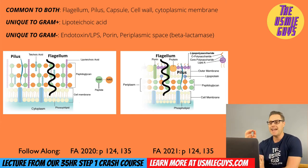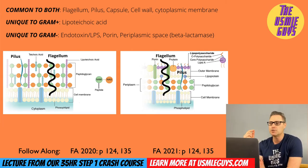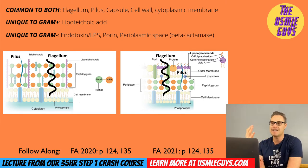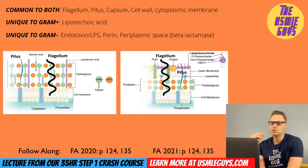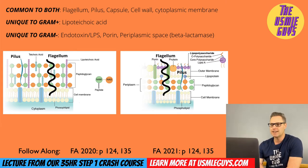Unique to gram-negative bacteria, we have the endotoxin or lipopolysaccharide, found in the outer leaflet. Endotoxin lipid A induces tumor necrosis factor as well as interleukin-1. Porins are necessary for transportation across the outer membrane. The periplasm is a space located between the cytoplasmic membrane and the outer membrane, and it has a role in accumulating components exiting the gram-negative bacterial cell.